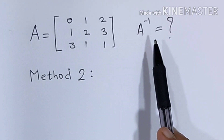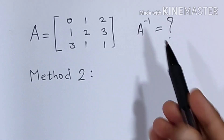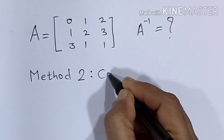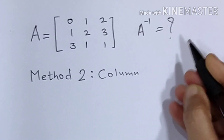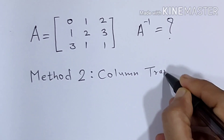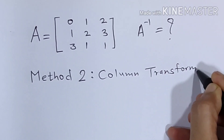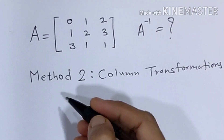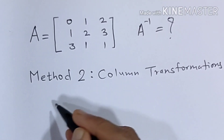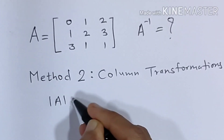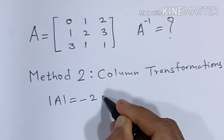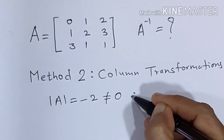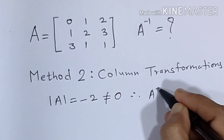Matrix A is given and we want to find A inverse using column transformations. The determinant of A in this case is equal to minus 2, which is not equal to 0. Therefore matrix A is invertible, or we say A inverse exists.